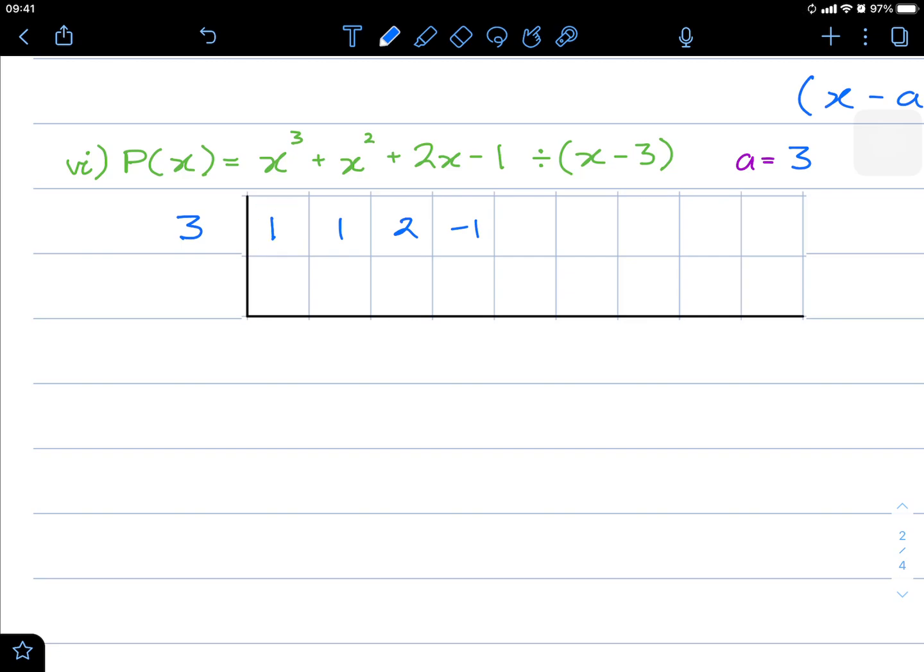We always ignore the first term and we begin our multiplication. 3 times 1 is 3. Adding these two gives us 4. 3 times 4 is 12. Adding these two is going to be 14. 3 times 14 is going to be 30 plus 12, 42. Adding these two, 41.